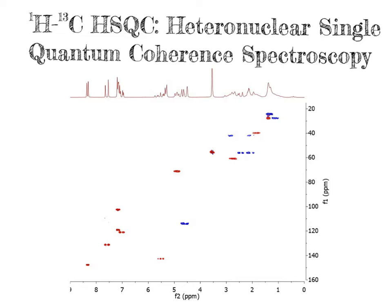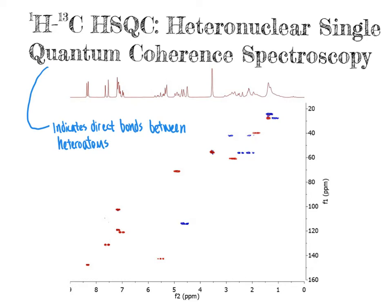What we are going to be looking at in a heteronuclear single quantum coherence spectroscopy experiment is two heteroatoms that are directly bonded to one another — it indicates direct bonds between the heteroatoms being evaluated. In the proton/carbon-13 HSQC experiment, it tells us which protons are directly bonded to which carbon atoms. If doing a nitrogen-15/carbon-13 experiment instead, it would tell us which nitrogens are directly bonded to which carbons. This gives us an additional piece of the puzzle in determining complete chemical structures of organic molecules.